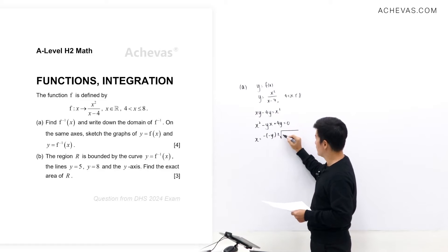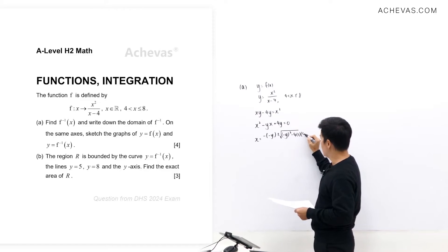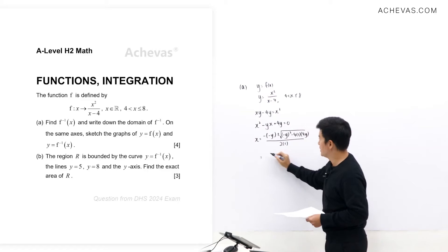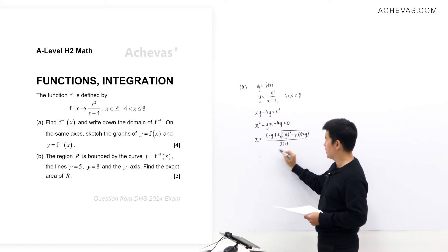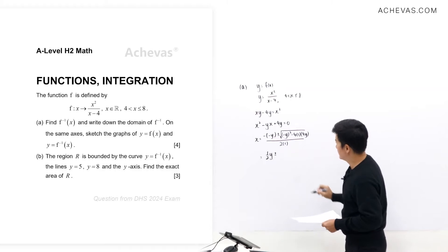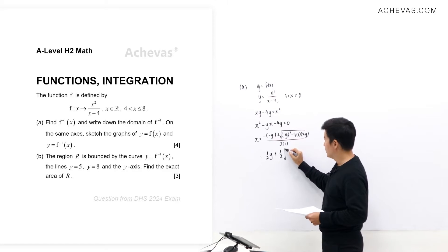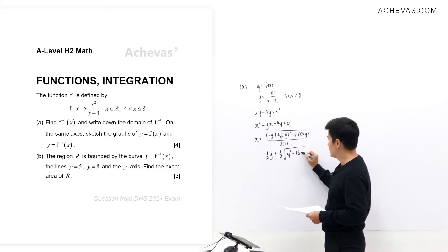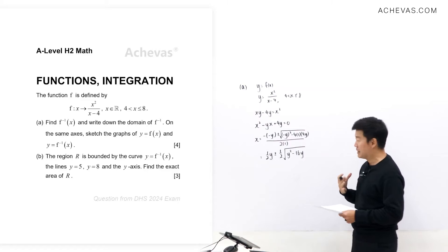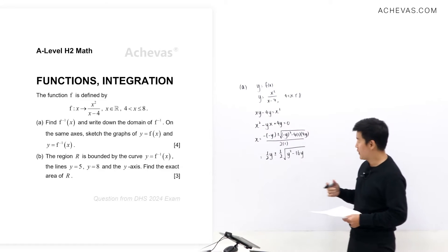Applying the quadratic formula, x = (-b ± √(b² - 4ac)) / (2a), we get x = ½y ± ½√(y² - 16y).